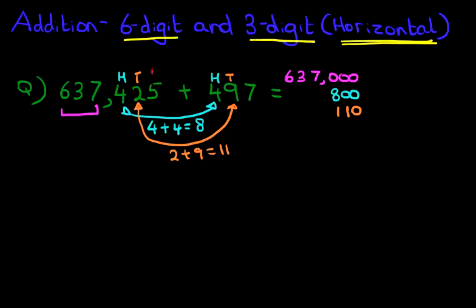And lastly, we've got the units. Let's take this all the way around. We've got five units plus seven units. Five plus seven is twelve. Because it's units, we just write down twelve.